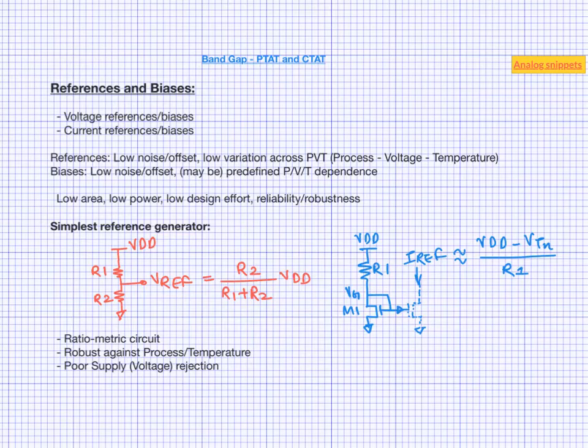But as a rule of thumb, generating low variation current references are much harder than generating low variation voltage references. So considering its simplicity, this circuit actually does a very reasonable job of making a current bias generator.